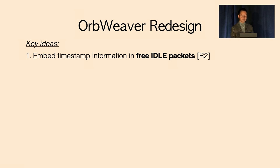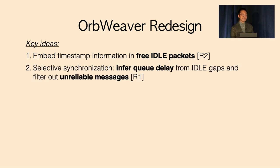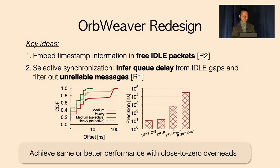The paper contains more details, but there are two key ideas. The first idea is to leverage the free idle packets to carry the timestamp information. The second idea is to use the predictability attributes to infer the queuing delays based on the idle packets, and only use the results with no contention to avoid such inaccuracies. In the end, we noticed that OpWeaver redesign could eliminate the messaging overheads while preserving similar or better performance even under high loads.